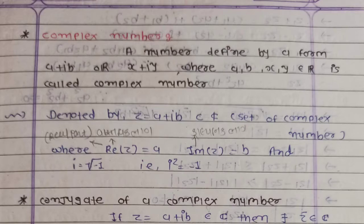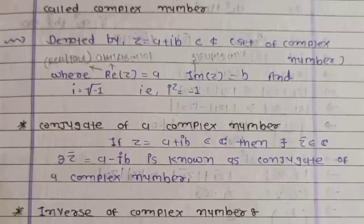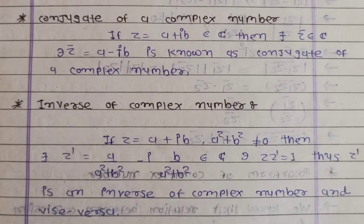For z equal to a plus ib, the inverse z dash (z') is equal to z bar over the modulus squared. That is, z dash is equal to z conjugate divided by a squared plus b squared, giving z dash equal to a over (a squared plus b squared) minus i times b over (a squared plus b squared). This satisfies z into z dash is equal to 1.